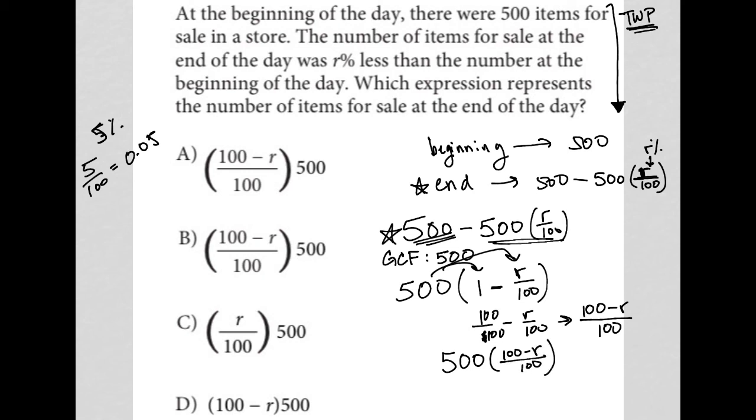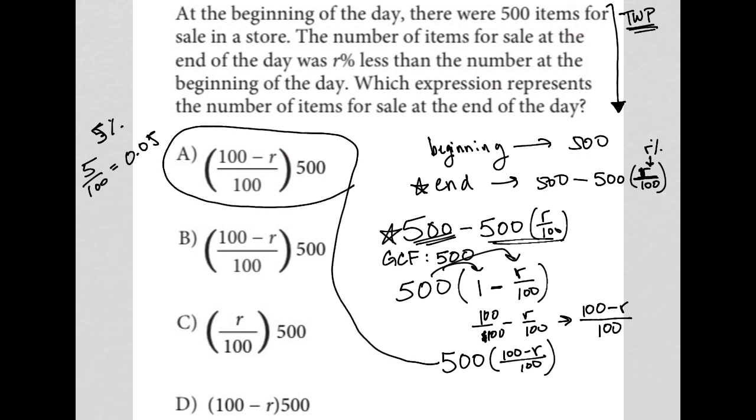Now I can see my answer. Answer choice A, which is 500(100 minus R) over 100, is the correct answer.